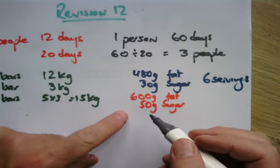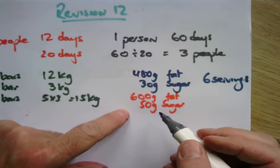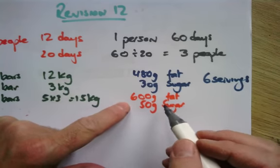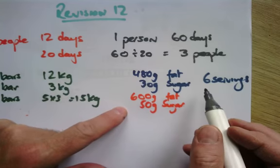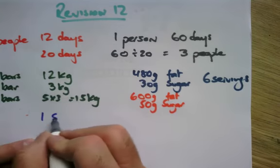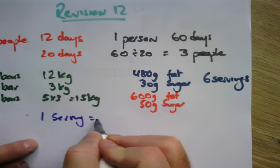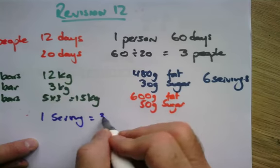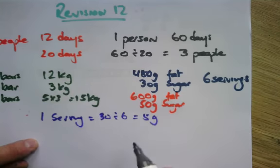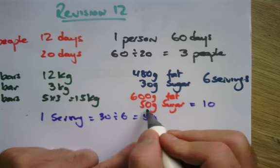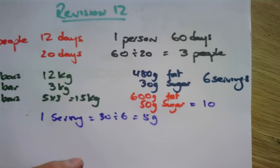So, I can sense that I've got more sugar than fat, but maybe I'm wrong. Let's work out first of all, how much sugar for one serving. So for one serving, I need 30 divided by 6, 5 grams of sugar. Which means I can get 10 people here with 50 grams.